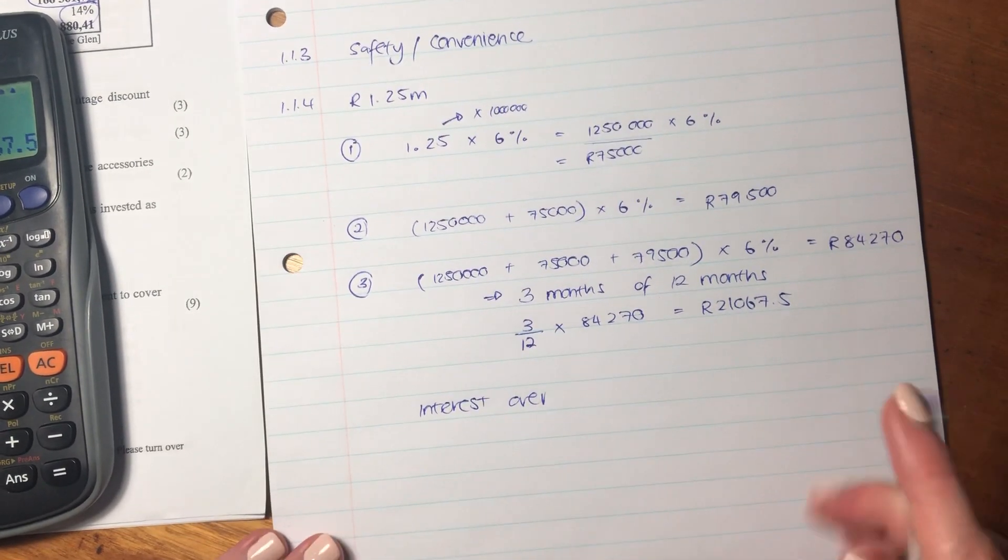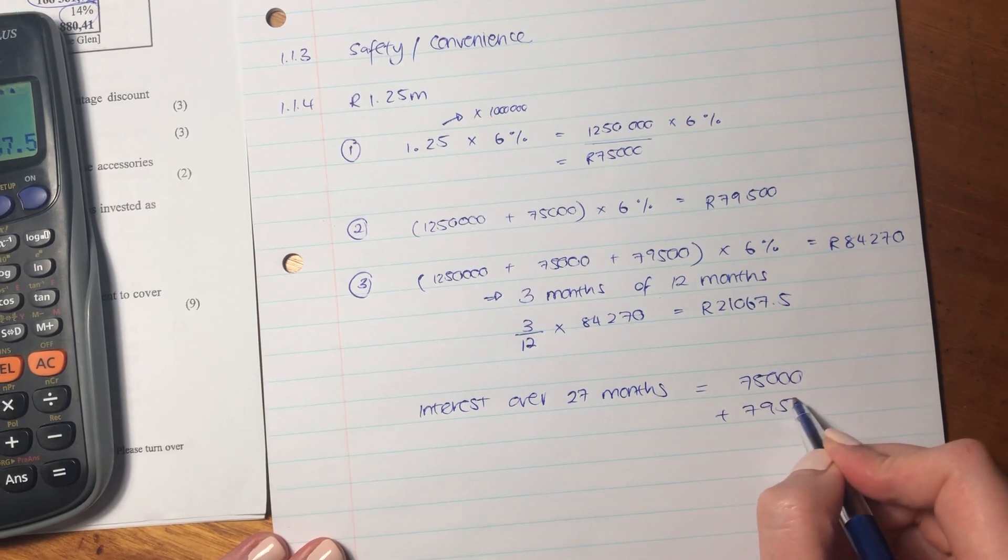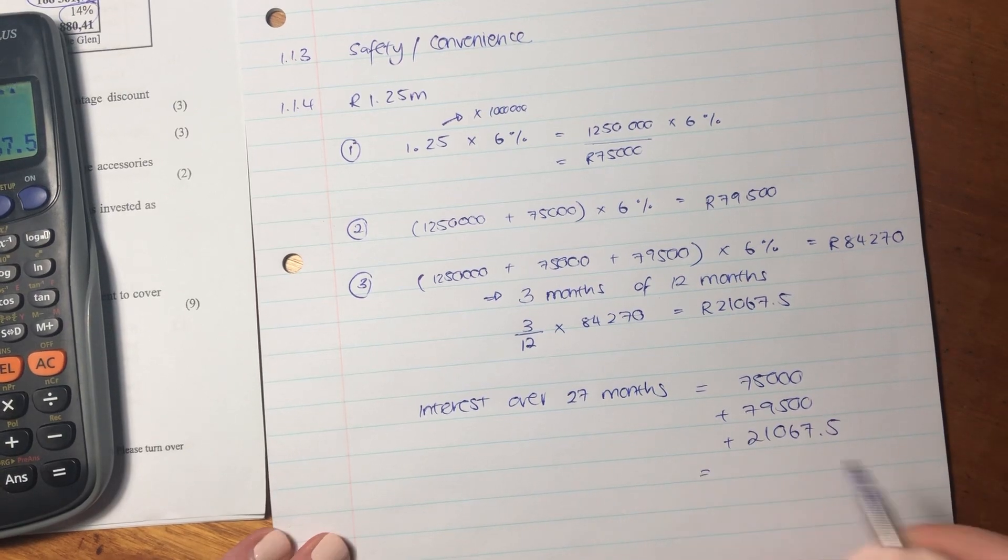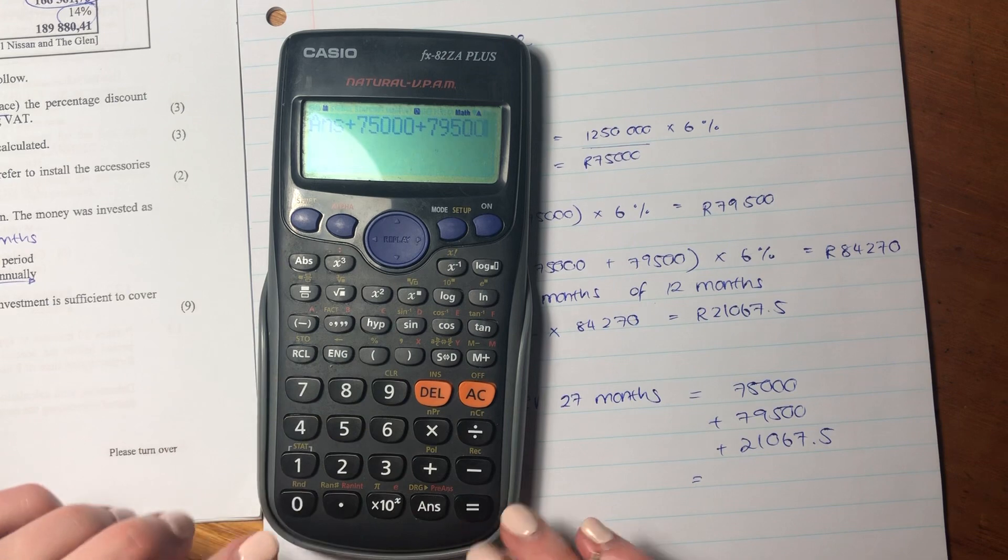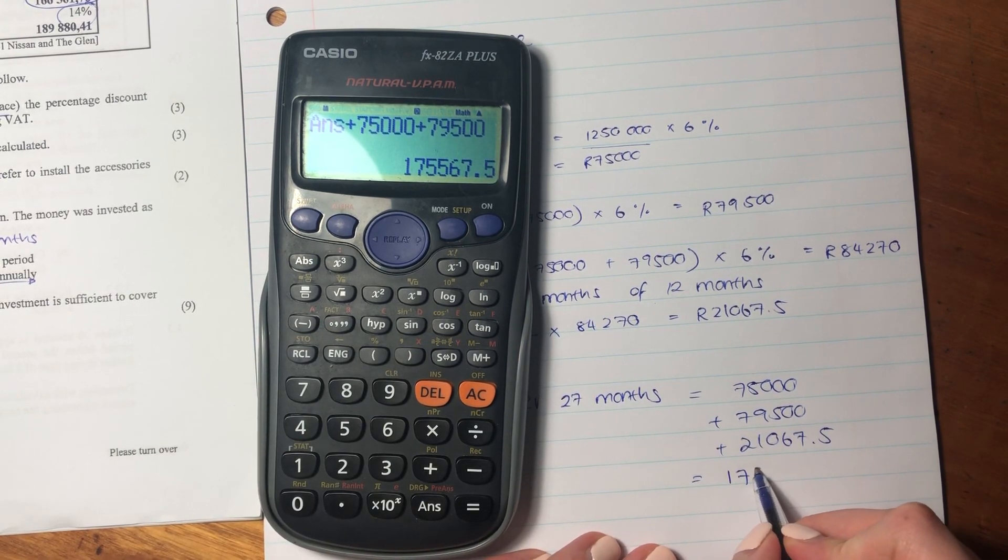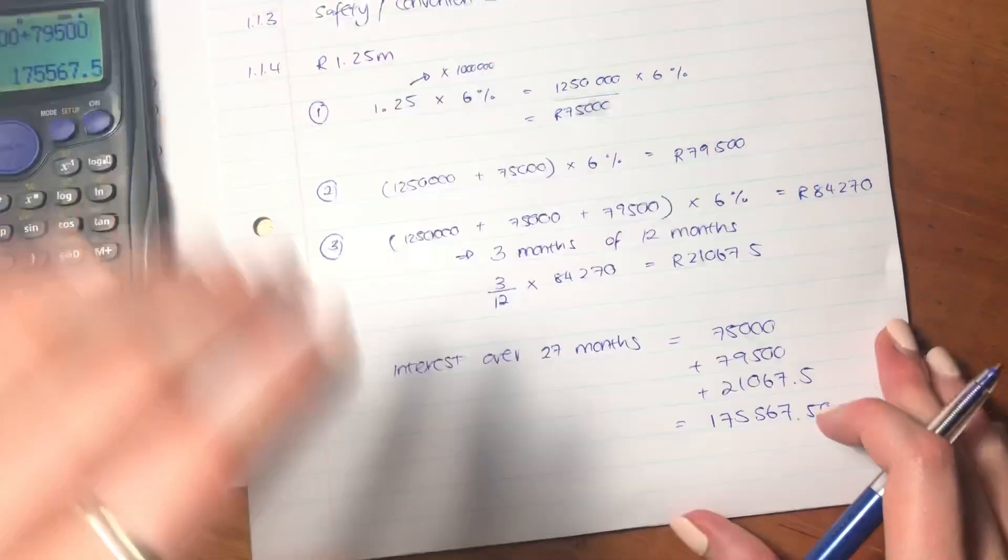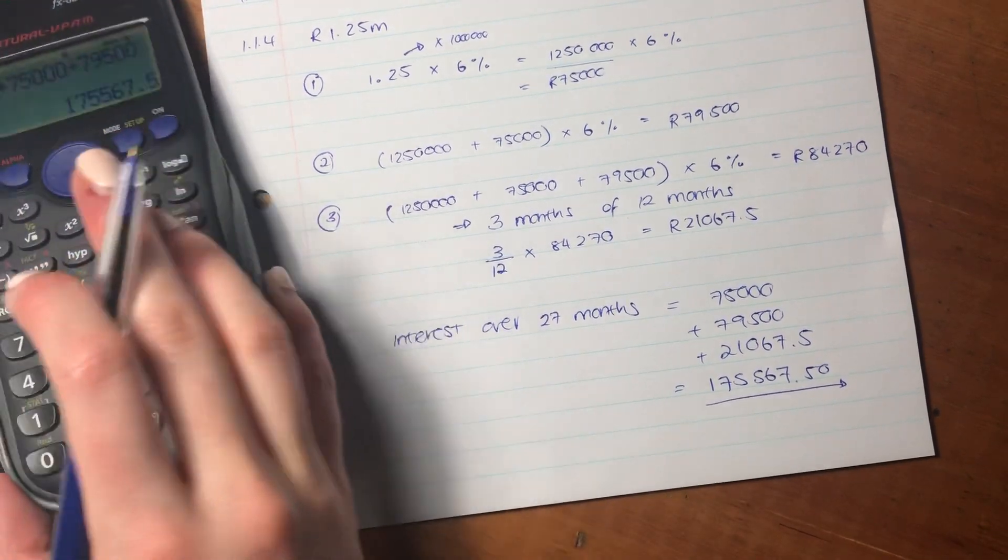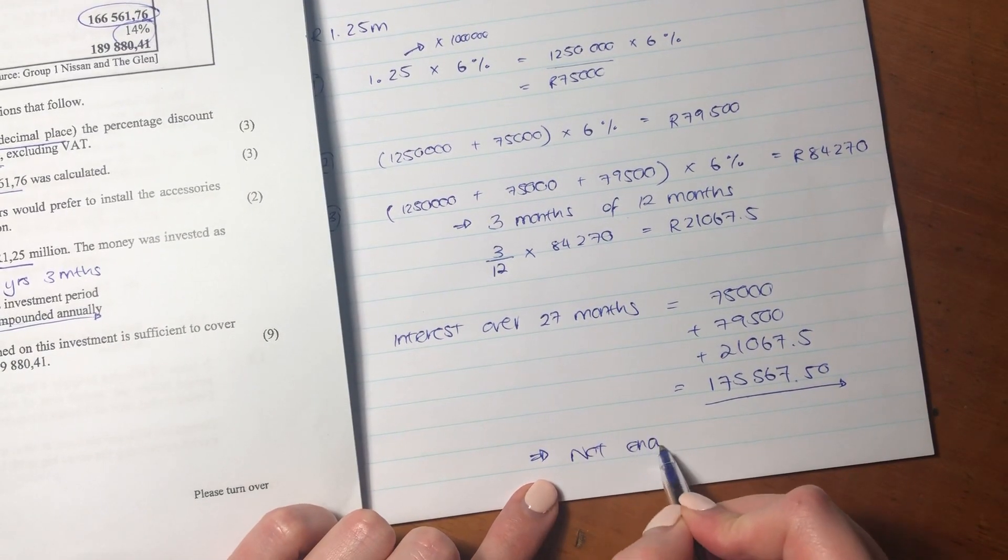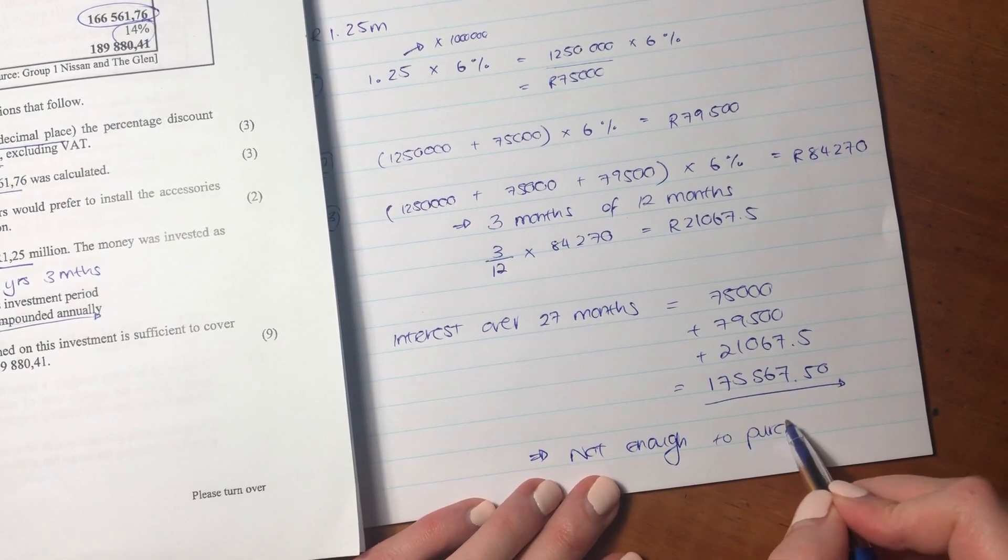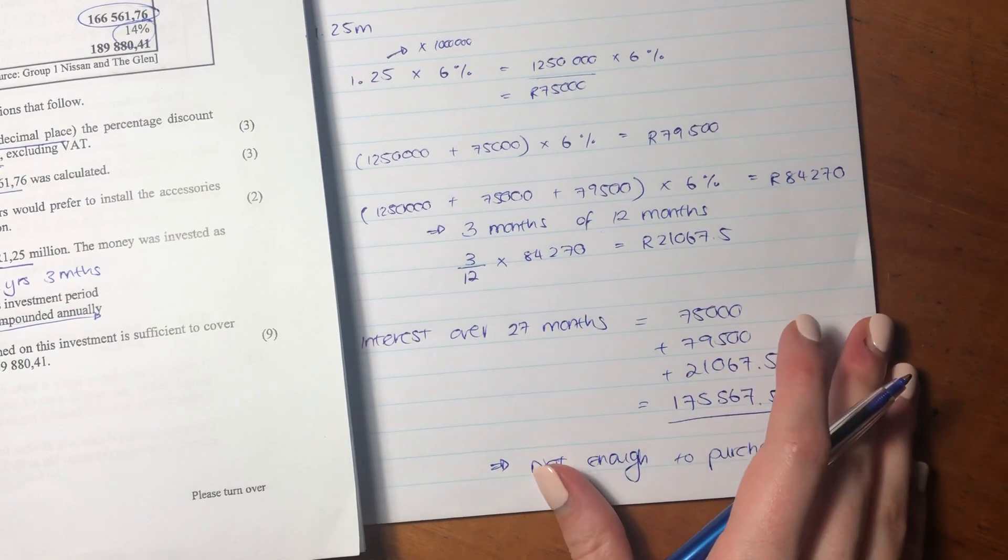So let's now add how much interest she earned over that period. So interest over 27 months - it's the 75,000 plus the 79,500 plus the 21,067.50. So put that into your calculator, add all of those guys together, and I'm getting 175,567.50. So what it's saying there is that's how much she's going to earn. It's not enough, do you see that? It's not enough to actually pay for the bucky. So remember, answer the question. You must say not enough to purchase bucky. You must always answer the question. The math is there to help you answer the question.